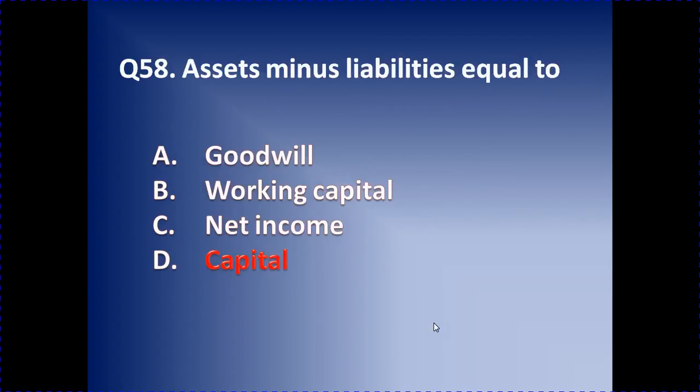Question number 58: Assets minus liabilities is equal to which of the following — goodwill, working capital, net income, or capital? Capital is the right answer. Goodwill is not derived from assets minus liabilities. Working capital is current assets minus current liabilities. Capital is the correct answer here.